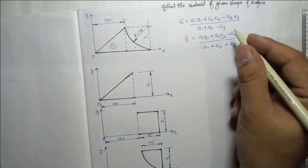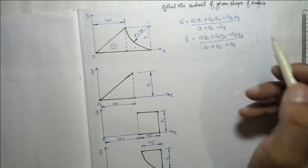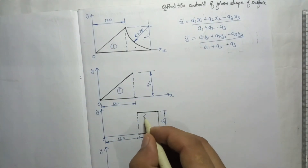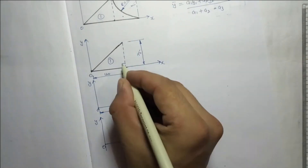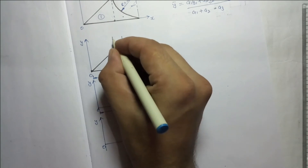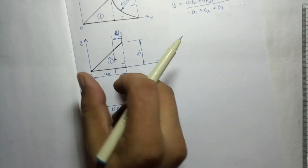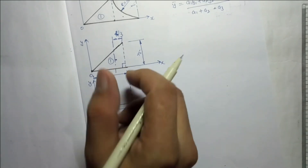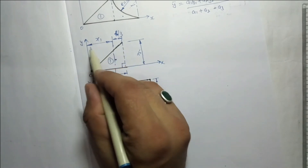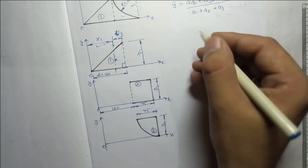To solve for the centroid of this object, we need A1, A2, A3 and the centroid coordinates x1, y1, x2, y2, x3, y3 for all three surfaces separately. For Surface 1 - the right angle triangle - its centroid location: x1 is measured from the origin. Using the standard formula, this distance from the right angle vertex is b/3, so x1 = b − b/3 = 120 − 120/3.